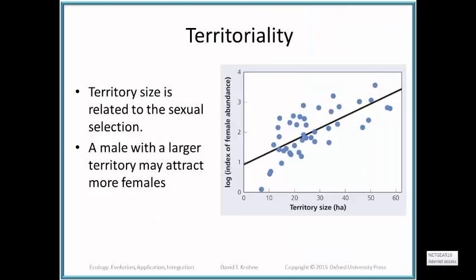Territory size is also related to sexual selection because the territory has innate resources involved — food, hiding places, nesting places. Territory size can be related to sexual and reproductive success: a larger territory can increase the number of females a male has access to. Larger territory draws more females, more females give more opportunities for copulation, and that improves fitness for the male. Territory size can therefore be related to reproductive success.